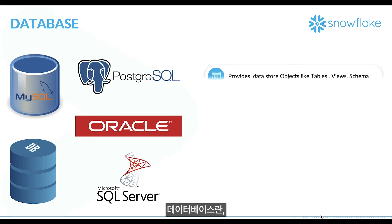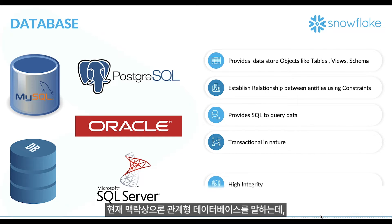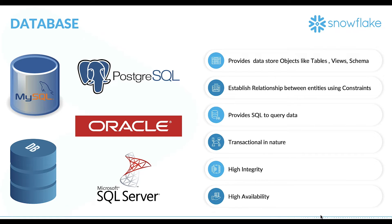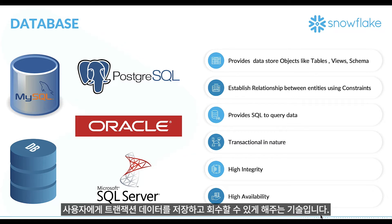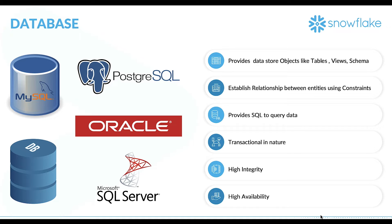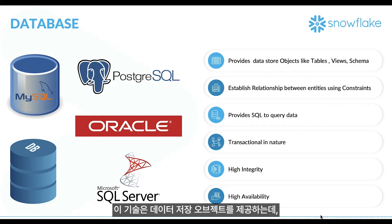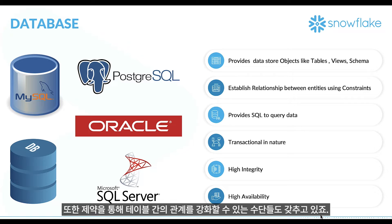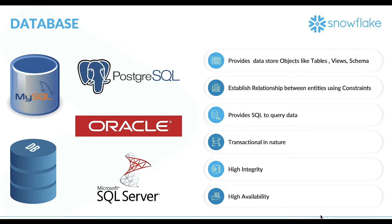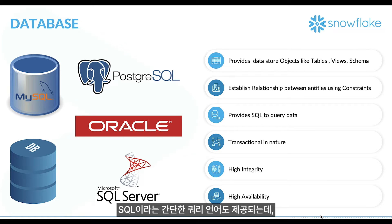A relational database is a technology that gives you the capabilities to store and retrieve transactional data. It provides data storing objects such as tables, views, materialized views, and schemas, and has ways to enforce relationships between tables using constraints. It provides a simple query language called SQL, or Structured Query Language.